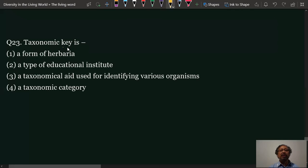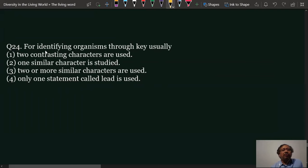Taxonomic key is a taxonomical aid used for identifying various organisms. Question 24: For identifying organisms through a key,